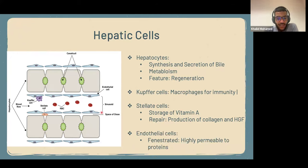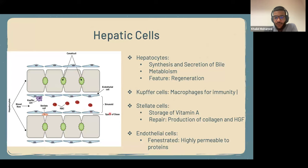The last type of cells are endothelial cells. These are the cells that surround the capillaries. The capillaries are fenestrated and allow proteins and water to pass through.